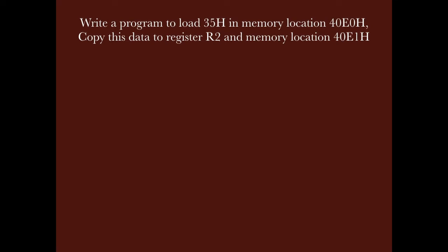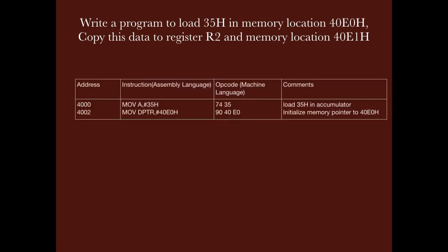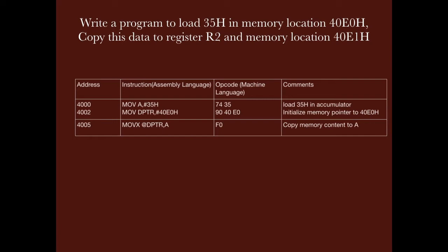The program objective is to load 35H in memory location 40E0H and copy the same data to register R2, as well as to memory location 40E1H. The program goes as follows — here we mention the address of the RAM where the program is written, then the program in assembly language, its opcode, and the comments. We start with loading the accumulator with the content 35H and initializing the memory pointer to 40E0H, then we copy the accumulator to the memory location as it is the first objective.